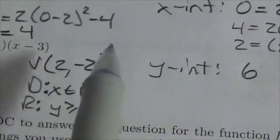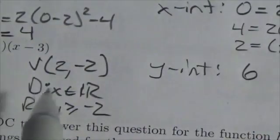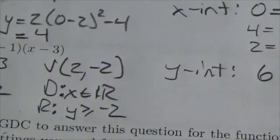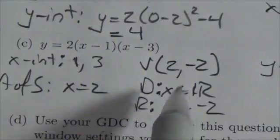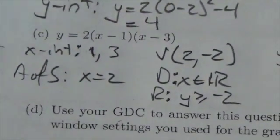I'm just going to double-check that I've got everything. I needed the vertex, axis of symmetry, domain and range, x and y-intercepts. And that's it. That's all we needed.